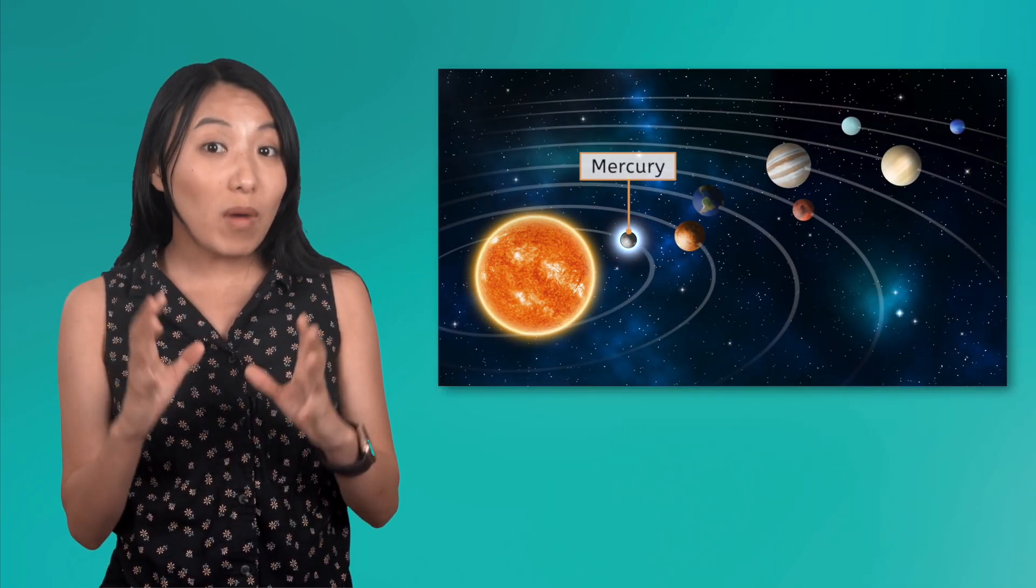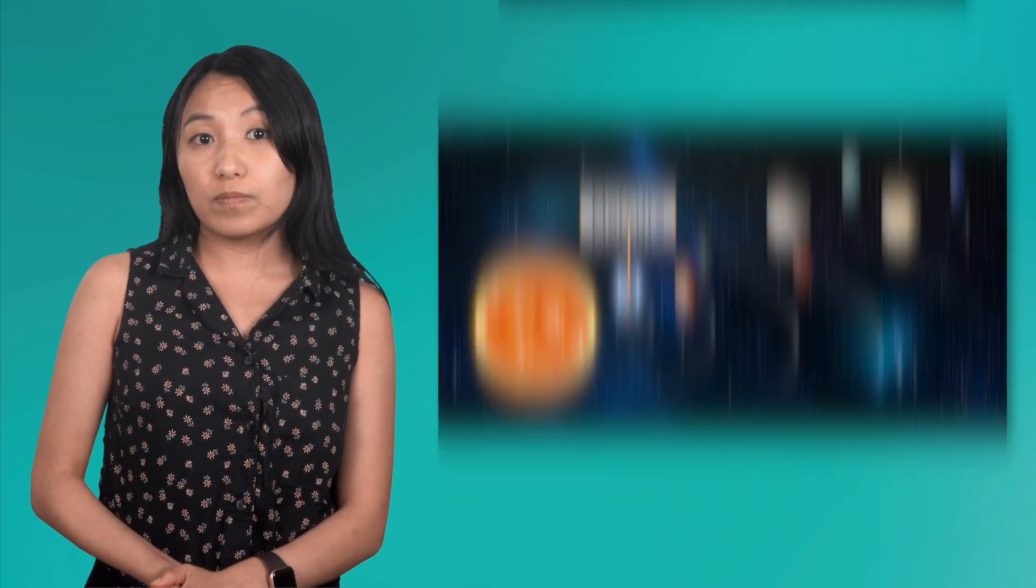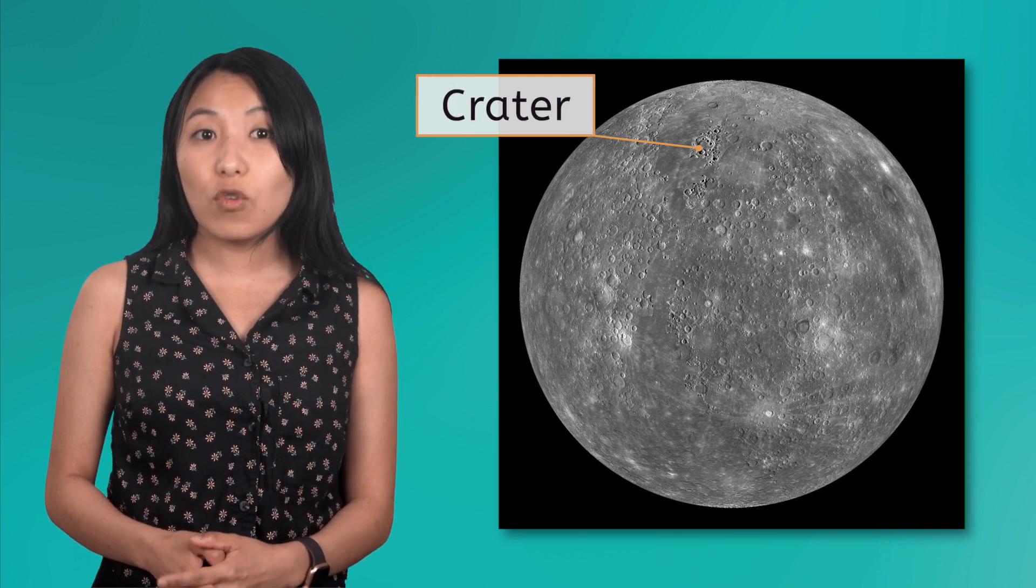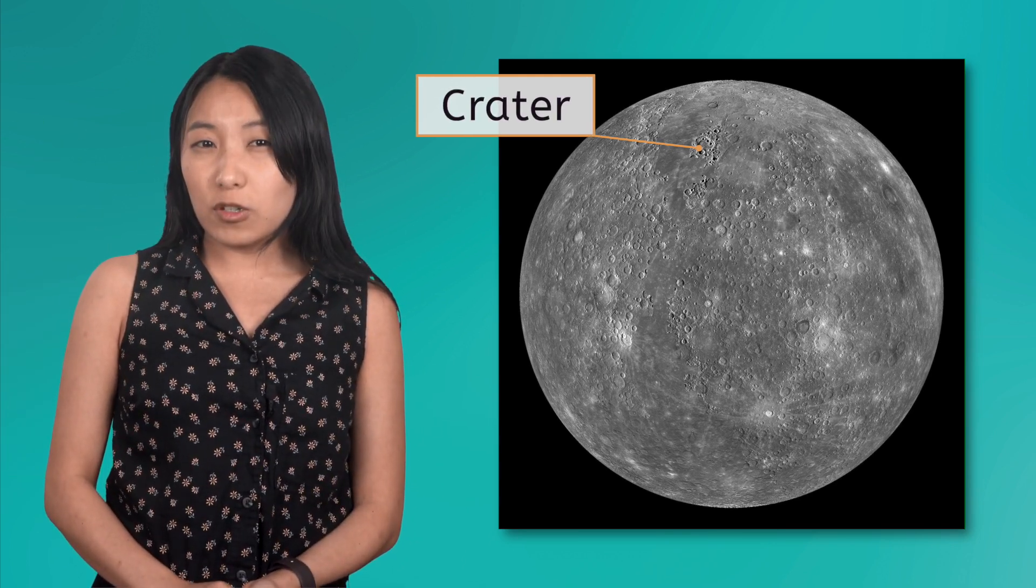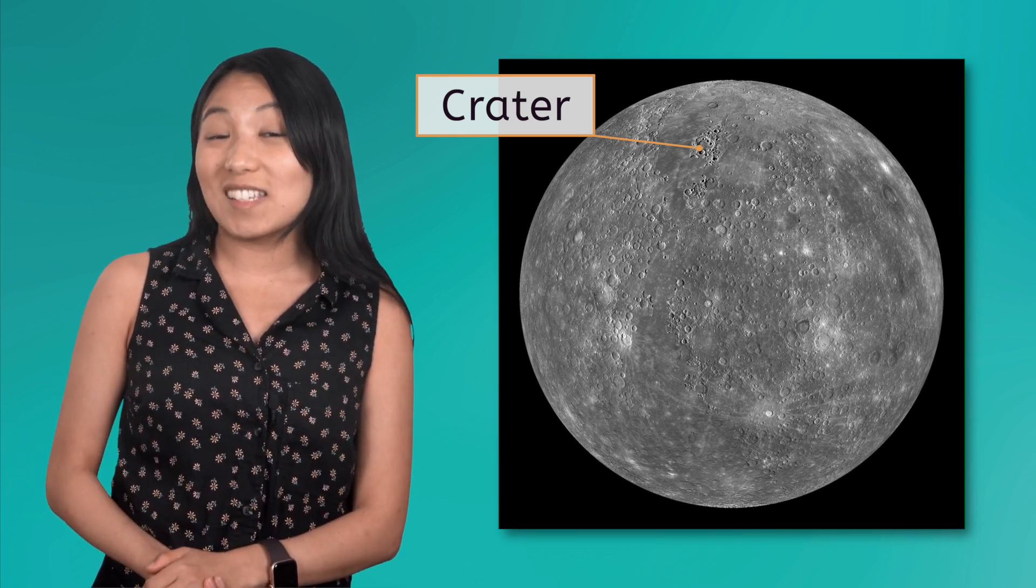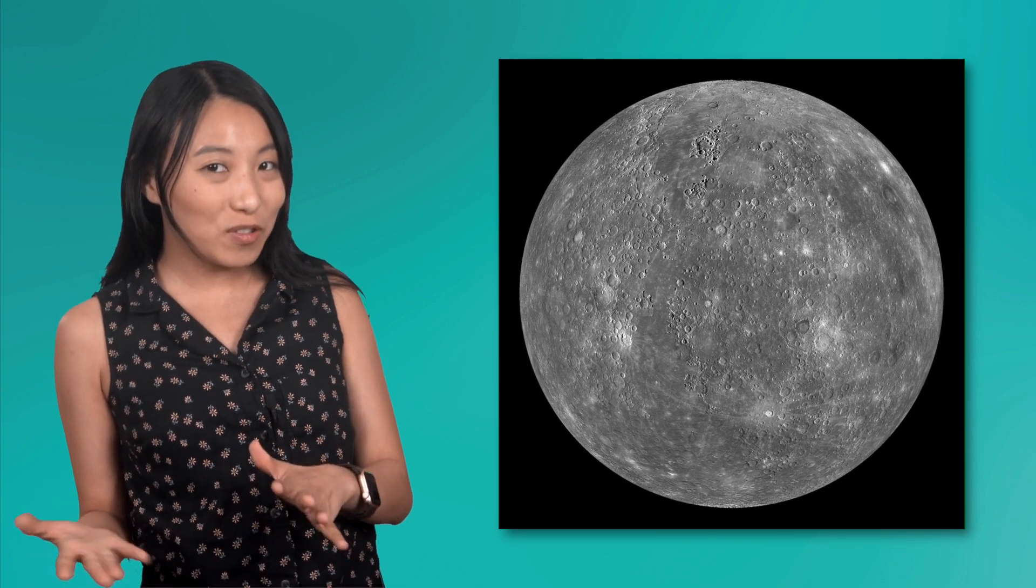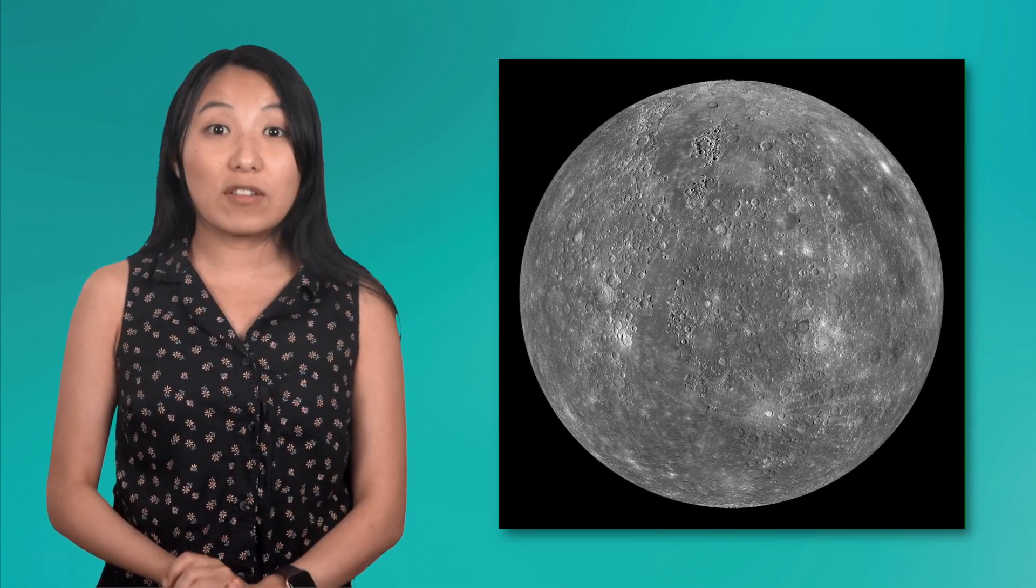Mercury is the smallest planet in our solar system, about the size of our Moon. Also, like our Moon, it has craters that were formed when meteoroids and comets crashed into its surface. If Mercury has so many impact craters, what does that tell you about its atmosphere? Again, similar to the Moon, Mercury only has a thin exosphere surrounding it.